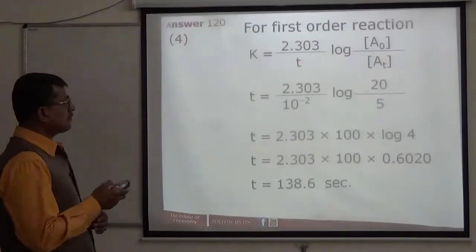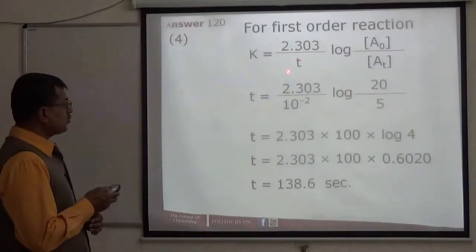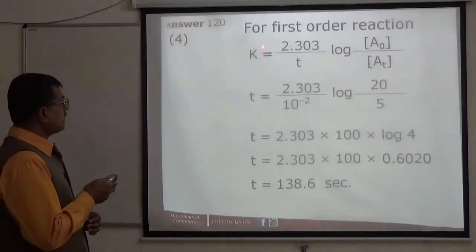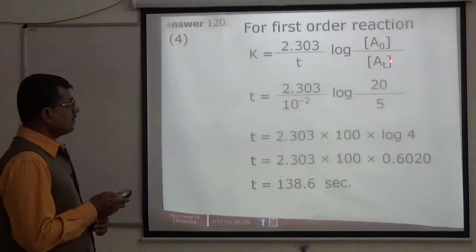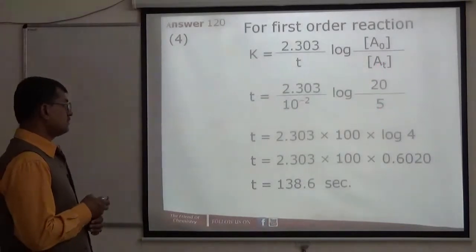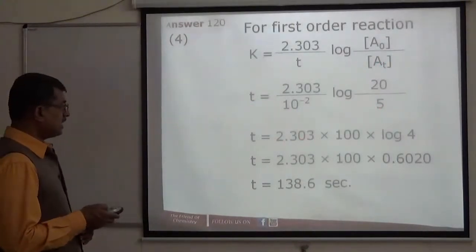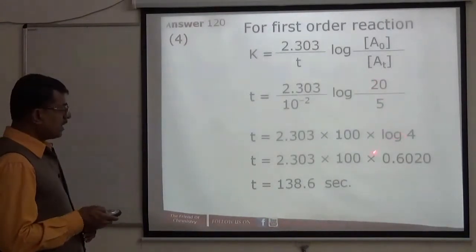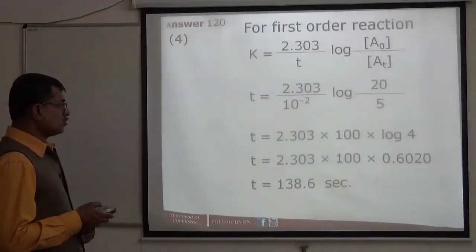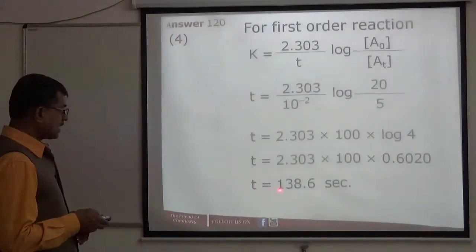Apply first order reaction formula. K value is given as 10 to the power minus 2. Initial concentration is 20, final concentration is 5. From here you calculate time. This becomes log 4. Log 4 value is 0.6020. Multiply this, time comes to 138.6 seconds.